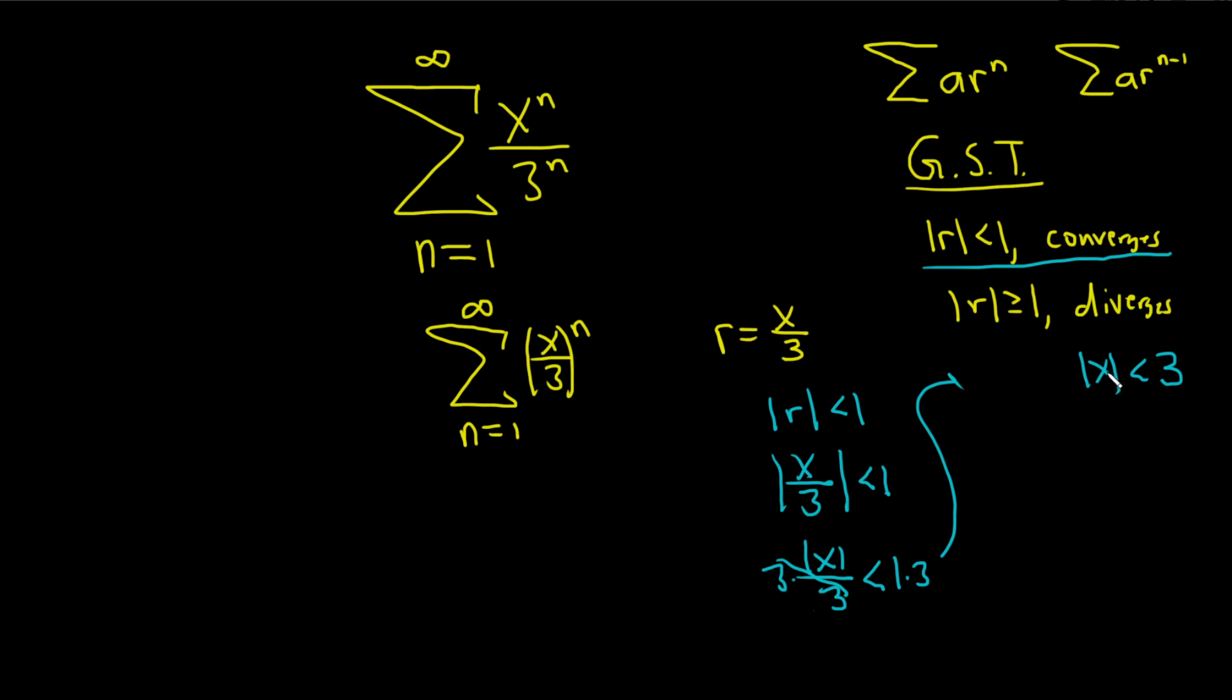Whenever you drop an absolute value like this, you get a plus and a minus. Here's the reason why. We're saying the absolute value of x is less than 3. The absolute value of x is the distance between x and 0. So we're saying x is a number whose distance from 0 is less than 3. This means that x must be trapped between 3 and negative 3. Those are all the numbers whose distance from 0 is smaller than 3. Those are the numbers that are between negative 3 and 3. Or you can just memorize it. It's just better to memorize it less than less than. That's it.